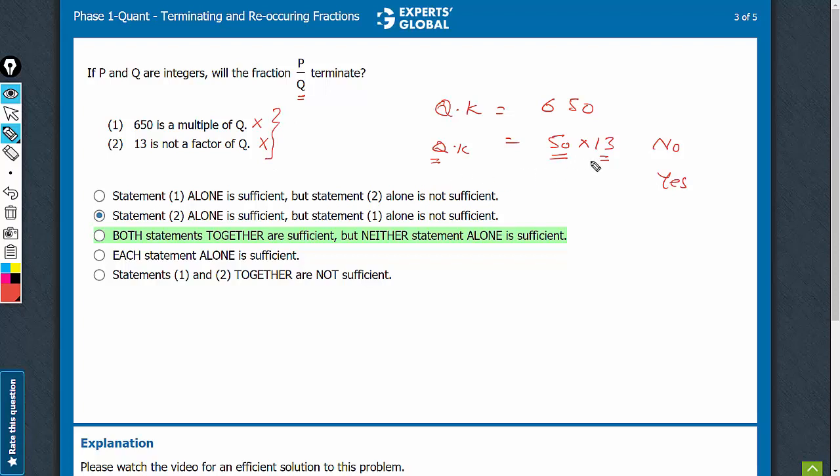On combining, we know that Q into K is equal to 50 into 13 and Q is not a multiple of 13. So, we know that Q cannot have 13. Q can be equal to 50 or it has to be one of the factors of 50.